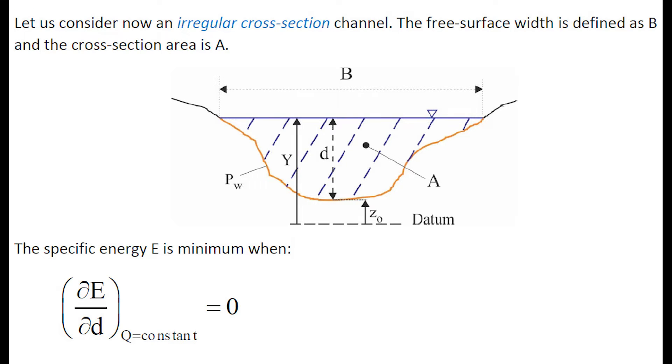Let us consider now an irregular cross-sectional channel. The free surface width is denoted B, and the cross-section area is denoted A. The specific energy is minimum when the variation with the water depth of the specific energy, for a constant discharge, equals zero.